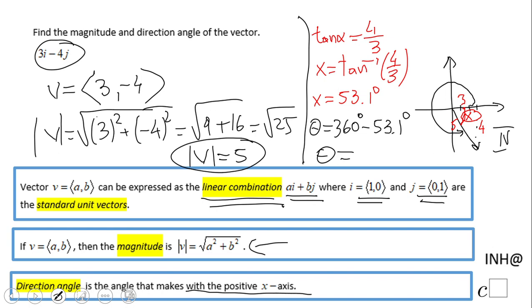360 minus 53.1 equals 306.9. This is the direction angle. If you enjoyed this video, click the like button. Welcome back to C Squared for more help. Thank you.